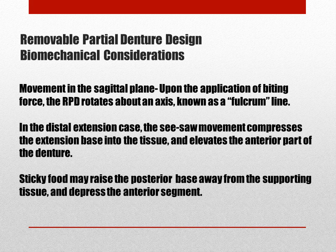Movement in the sagittal plane is seen as an anterior-posterior rocking of the denture about the fulcrum line. The fulcrum line is an axis of rotation passing through the most posterior abutment on either side of the arch. This may pass through any rigid portion of the clasp assembly contacting the tooth above the height of contour. It is most easily envisioned as passing through each rest. In the distal extension case, the biting force compresses the base into the tissue, while lifting the anterior segment away from the teeth. Sticky foods may lift the base away from the supporting tissue, depressing the framework in the anterior area. This seesaw movement may result in trauma to the primary abutment.